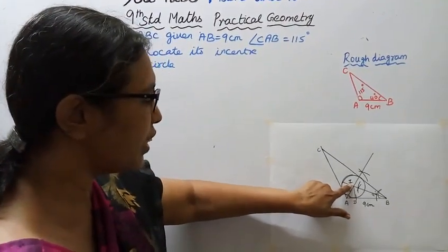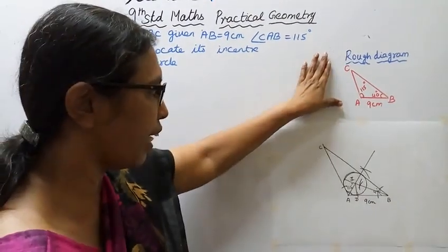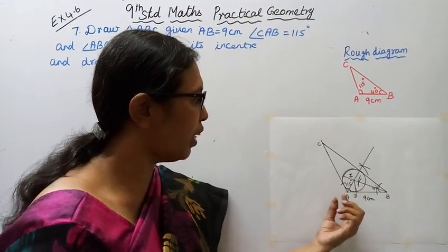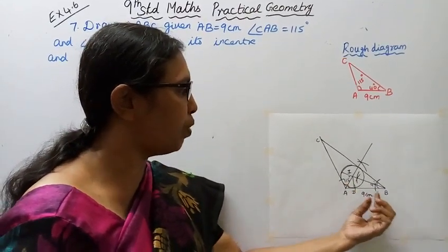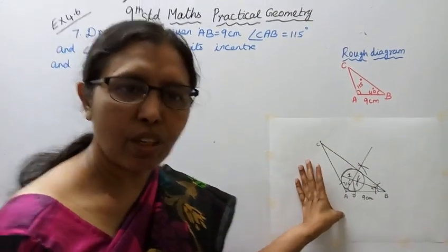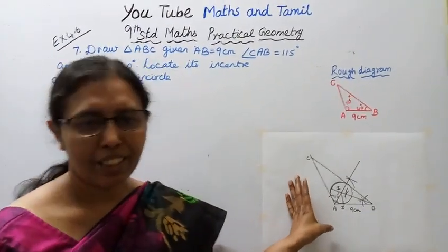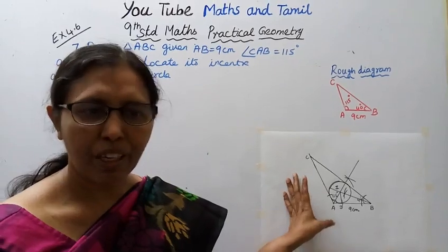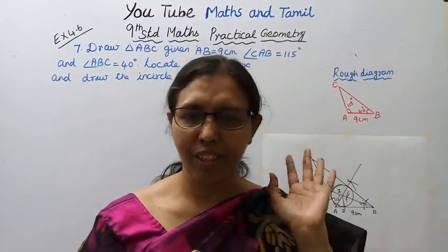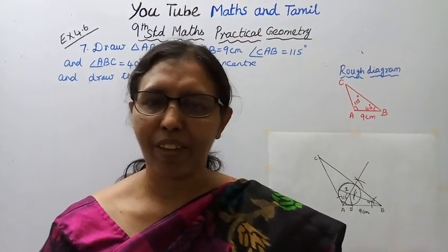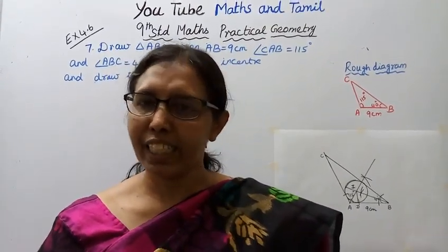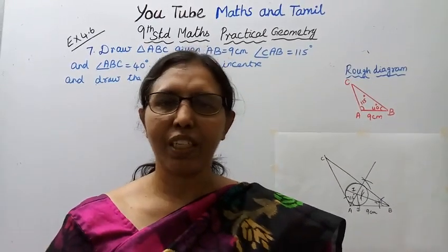The incenter is located and the inscribed circle is drawn. This is the rough diagram with the correct angles: 115 degrees and 40 degrees. If you follow these steps, you can get the incenter and the inscribed circle. This channel helps you score 100 marks. If you want to subscribe, please subscribe and click the bell button.